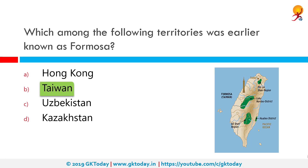The Republic of Formosa was a short-lived republic that existed on the island of Taiwan in 1895, between the formal cession of Taiwan by the Qing dynasty of China to the empire of Japan by the Treaty of Shimonoseki, and its being taken over by Japanese troops.